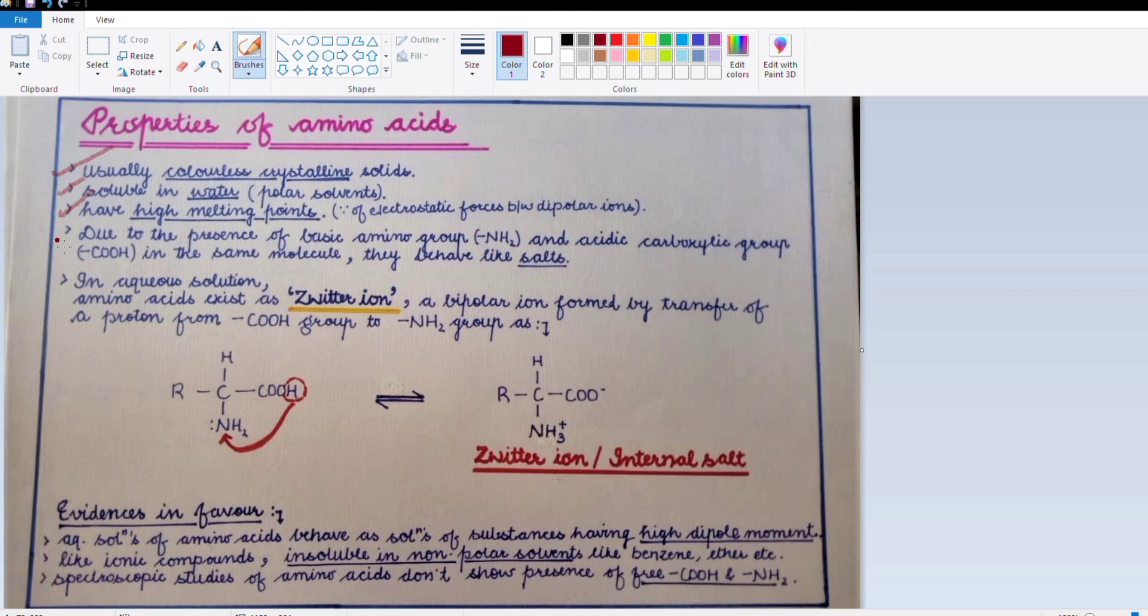The next property of amino acids is that there are two types of groups present - they are bifunctional. There is one acidic group (-COOH) present and one basic group (-NH2) present. Due to both acidic and basic groups in a single molecule, they behave as salts, because acid and basic properties neutralize each other and they behave like salts.